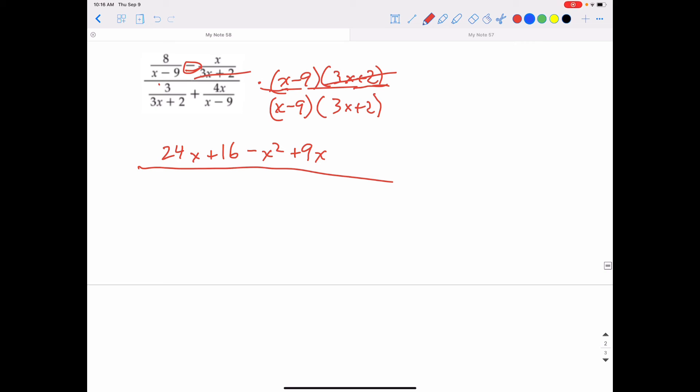All over, and then we do the same thing in the denominator. So, this time, the 3x plus 2s would cancel. And that would give me 3 times x minus 9, which is 3x minus 27. For the second fraction, we can only have the x minus 9s cancel out. So, I have 4x times 3x plus 2, and that's going to be 12x squared plus 8x.